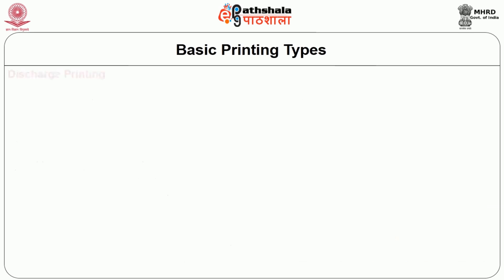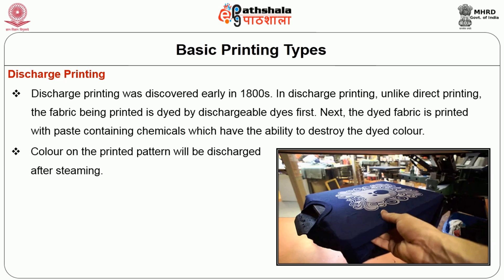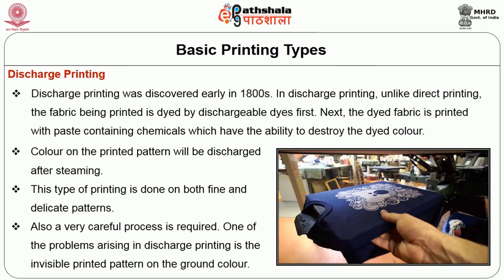Discharge printing was discovered early in the 1800s. Unlike direct printing, the fabric is first dyed with dischargeable dyes; then a paste containing chemicals that can destroy the dyed color is printed onto the fabric. The color on the printed pattern is discharged after steaming. This type of printing is done on both fine and delicate patterns, requiring a very careful process. One problem in discharge printing is the invisible printed pattern against background colors.